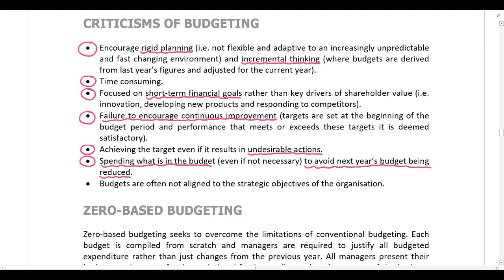For example, if only 80% of the training budget has been spent and it's close to the end of the financial year, further training which may not be necessary may be arranged just so that the training budget for next year is not cut. Lastly, budgets are often not aligned to the strategic objectives of the organization.